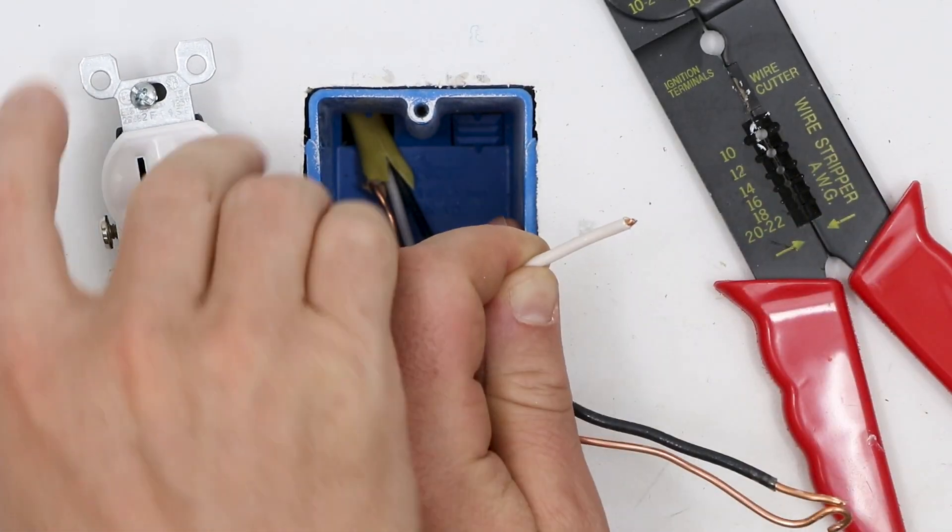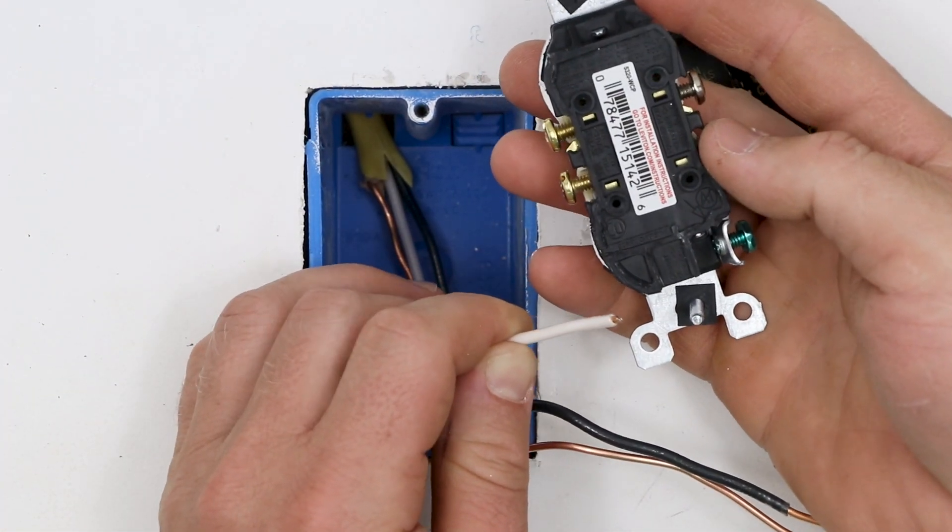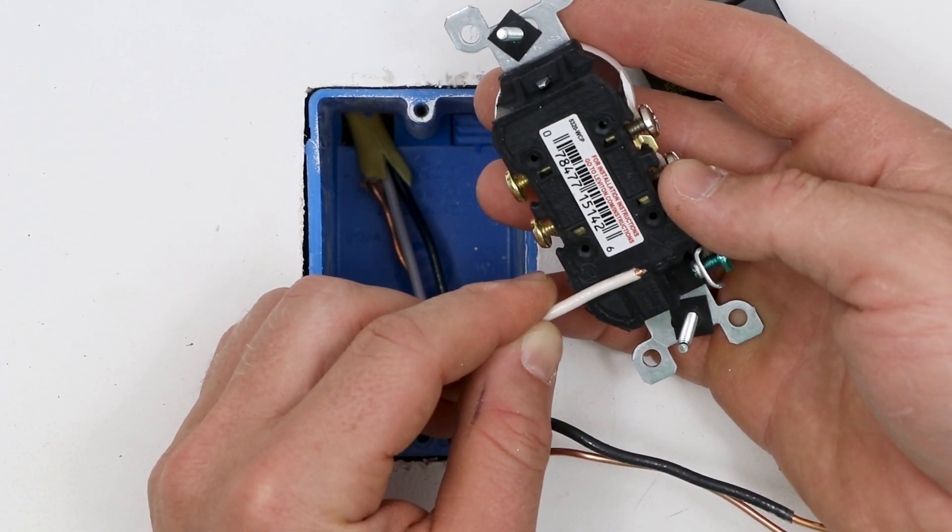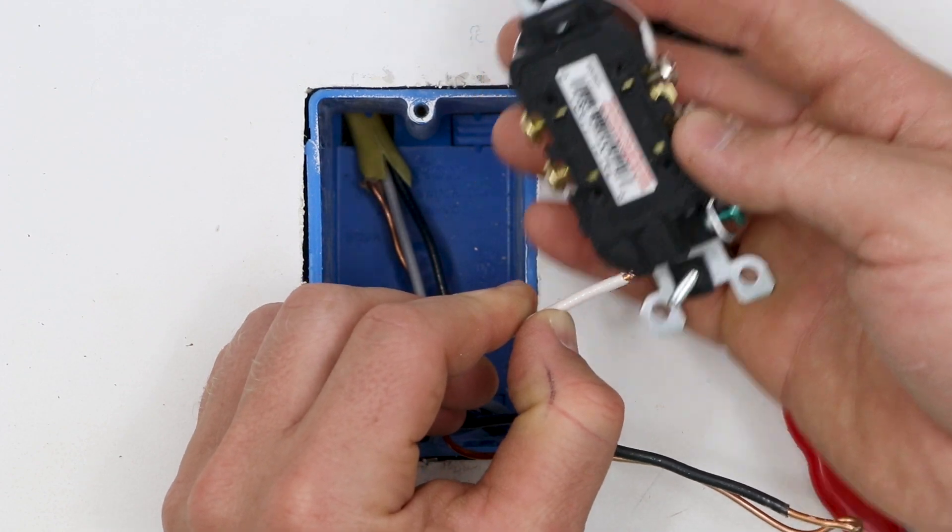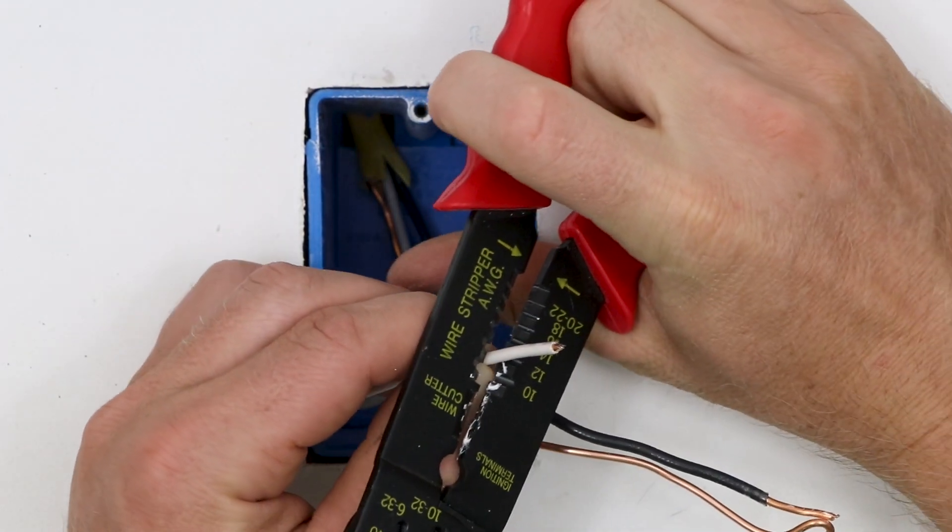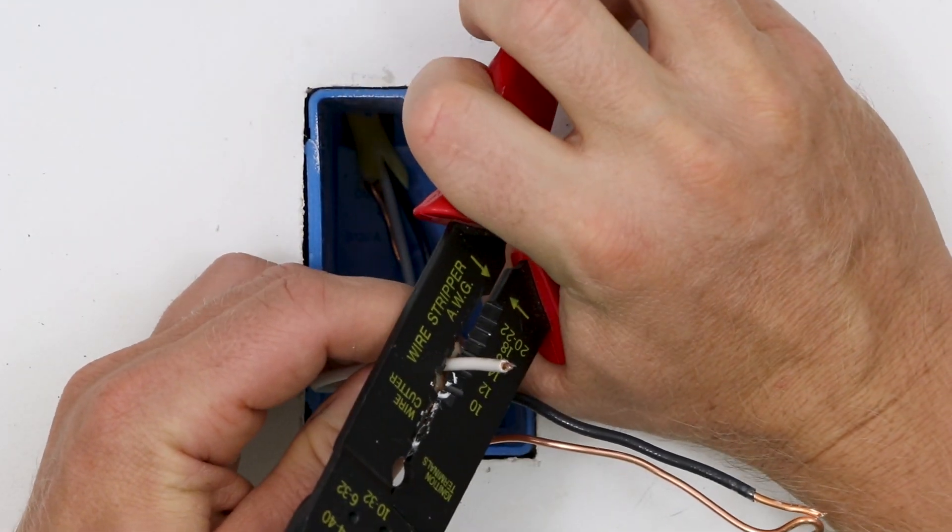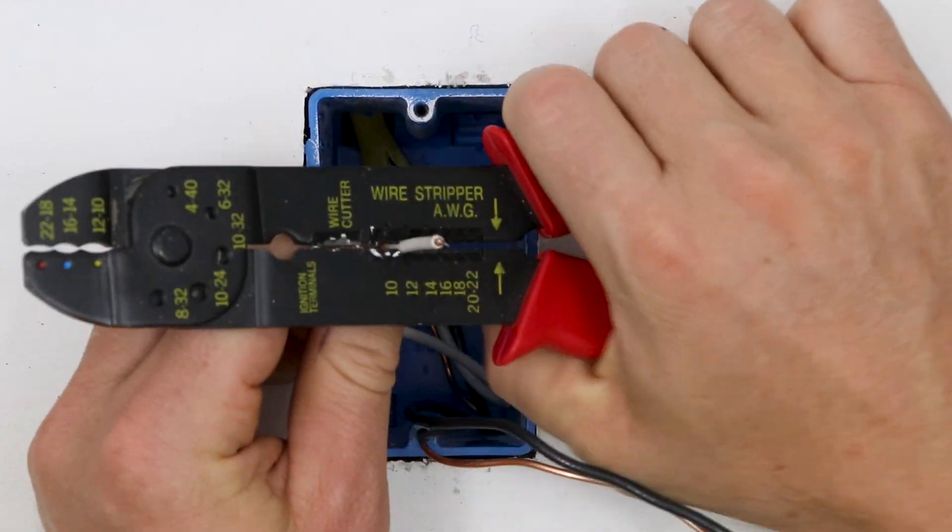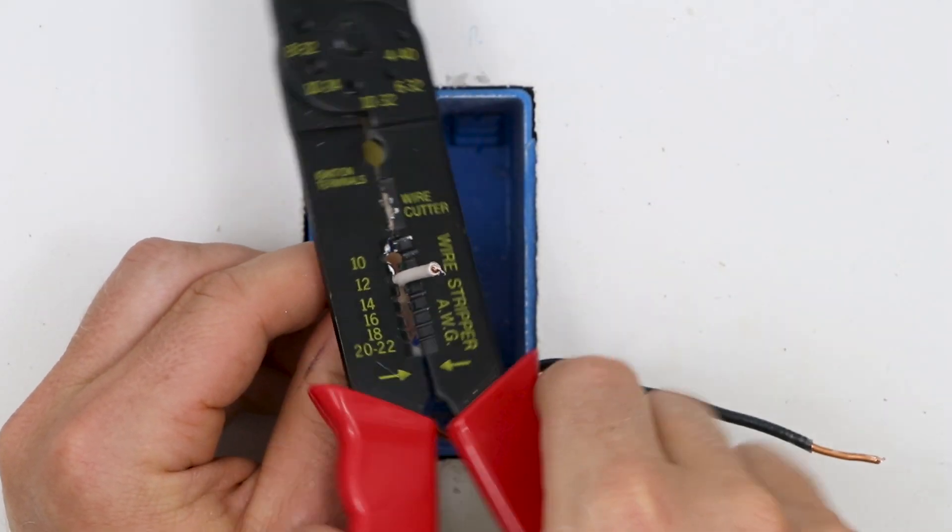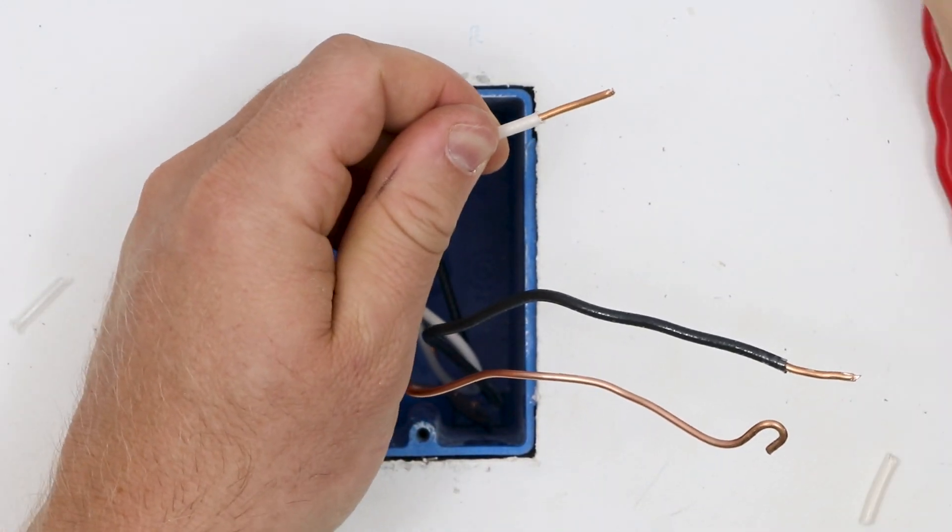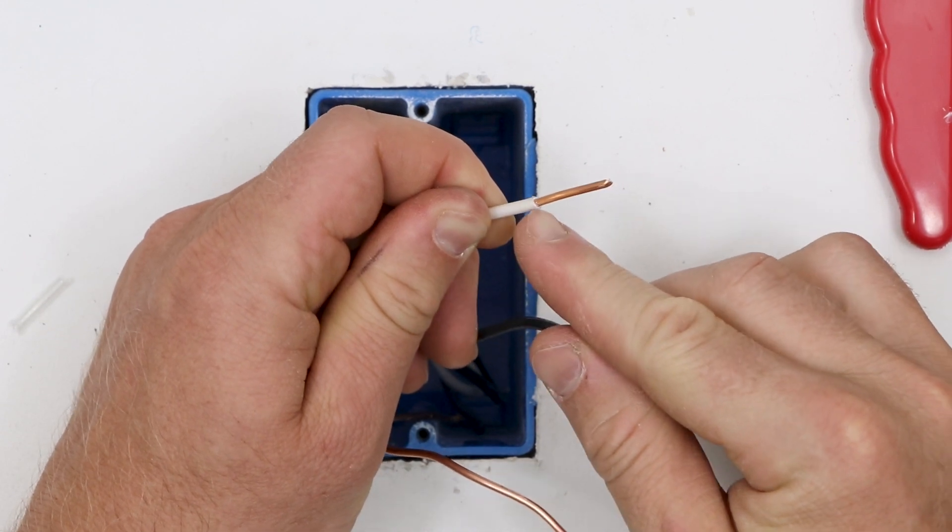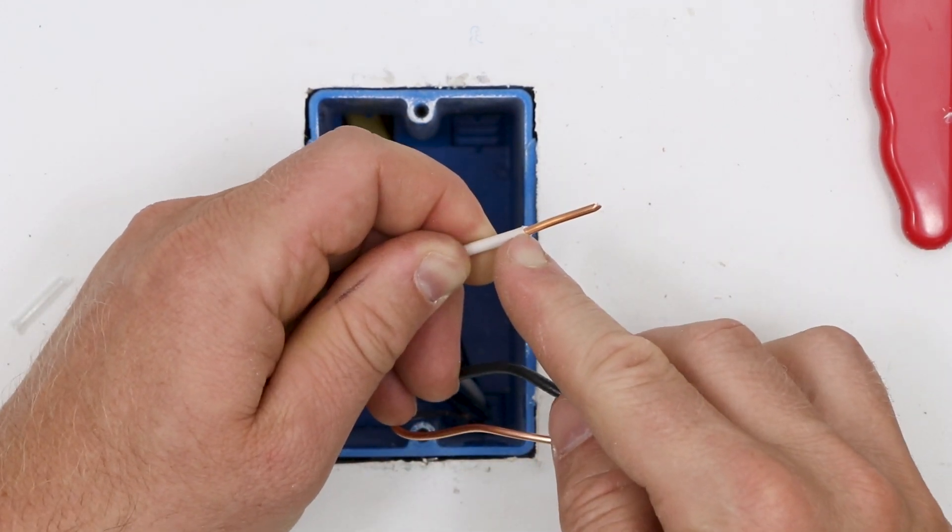Now, to know the strip length, we're going to go to the back of this receptacle and it'll either say it or it'll show us a strip gauge right here. So, I'm going to need to go to about there where my thumb is. I'm going to take this, I'm going to open it up and stick it into the 12-gauge slot. And I'm going to gently kind of clamp around it and twist. I don't want to cut into the wire. All right, there. So, we got a nice clean wire here. There's no gouging in the wire back here where we cut the insulator.